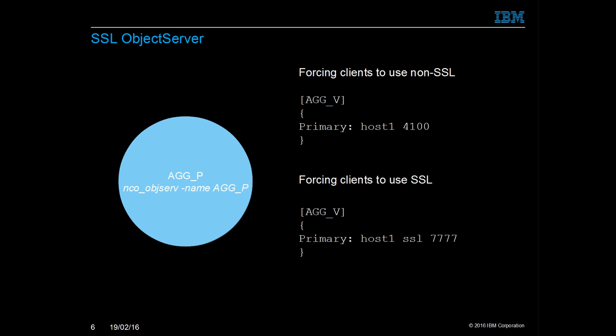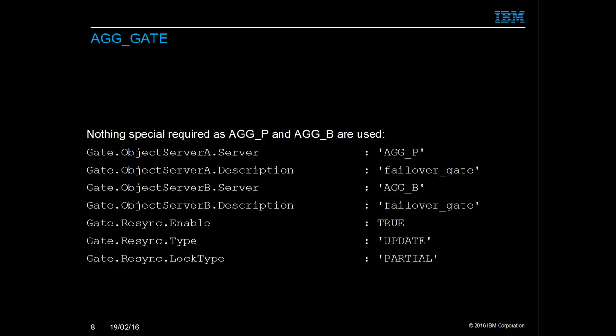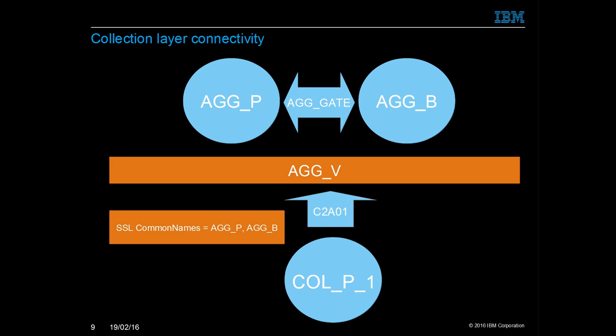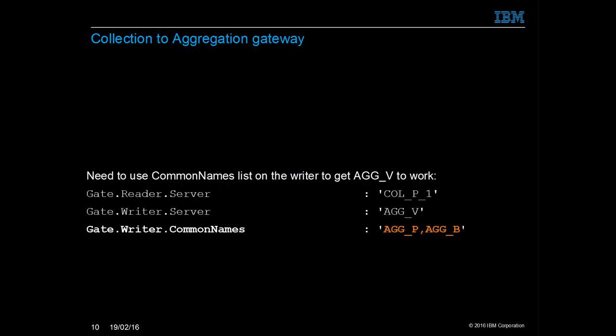Clients access the aggregation layer using the virtual object server name. The aggregation's bidirectional gateway configuration does not require any special configuration. The collection layer gateways need to access both aggregation object servers. This is achieved by using the common names property for the SSL certificates. Setting both common names in the gate.writer.common_names property allows the collection layer gateways to connect to either object server.